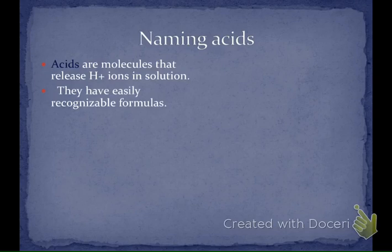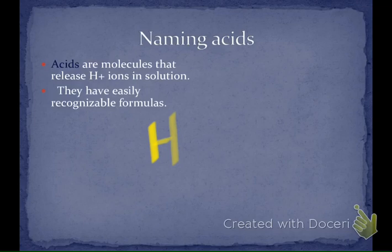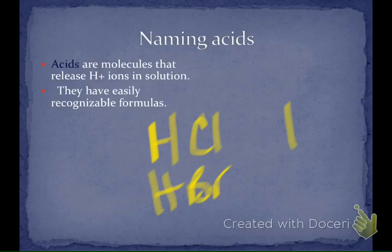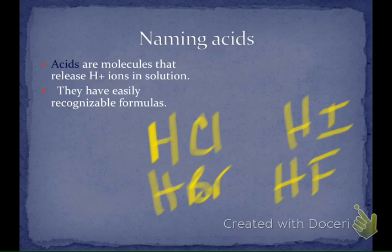What we're going to look for in an acid is hydrogen in the first position. Hydrogen can be bound to anyone in group 17 — it could be hydrogen with chlorine, hydrogen with bromine, hydrogen with iodine, hydrogen with fluorine, any of those. We know it's an acid because we're looking for hydrogen in the first position.